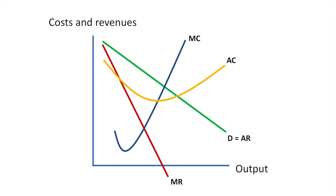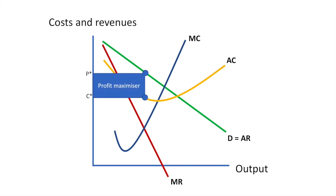Here's what satisficing might look like on a diagram. We'll use our diagram from before of an imperfectly competitive market. I'll show the area of supernormal profit for a maximizer in blue, which corresponds to price P-star. Remember, their costs are C-star per unit, so the blue shaded area represents their supernormal profit.